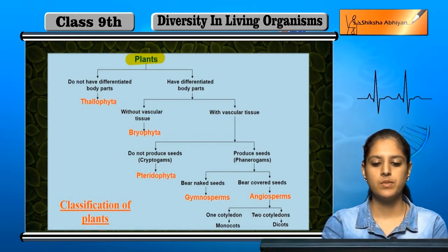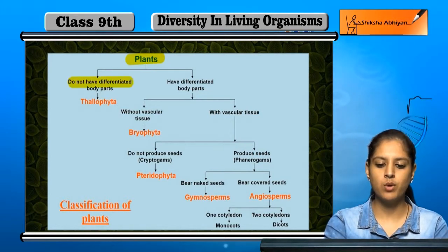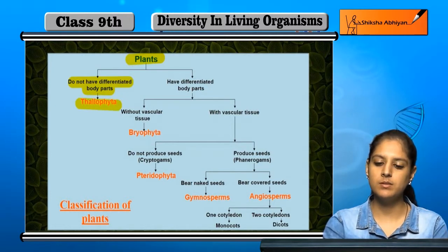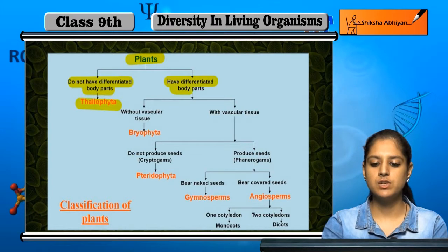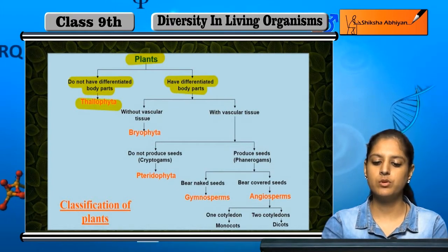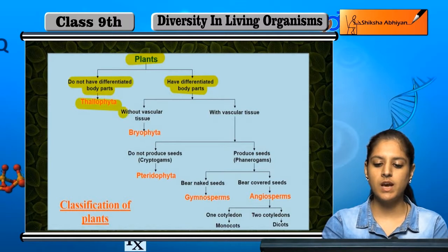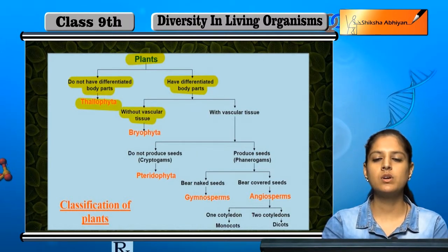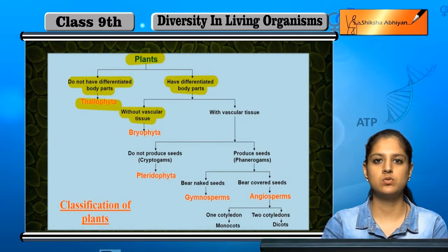First, plants. If they don't have differentiated body parts, they are called Thallophyta. The plants that do have differentiated body parts are divided into two parts: those that have vascular tissue to conduct water and other substances, and those that don't.